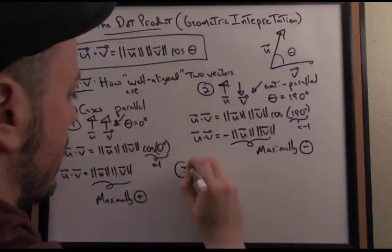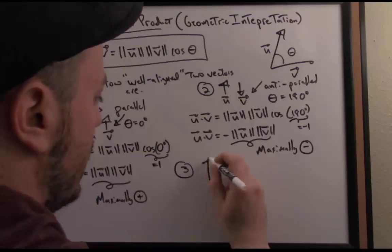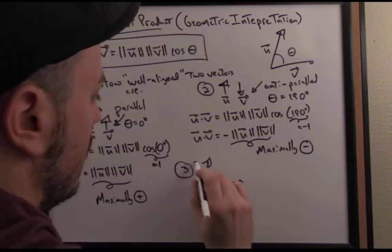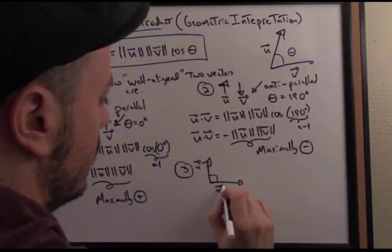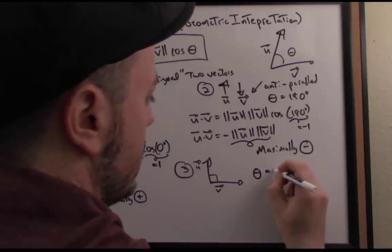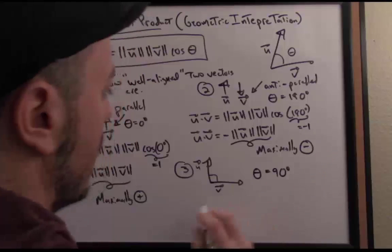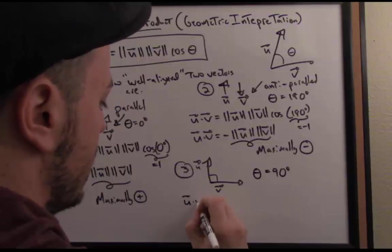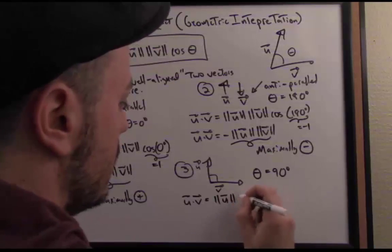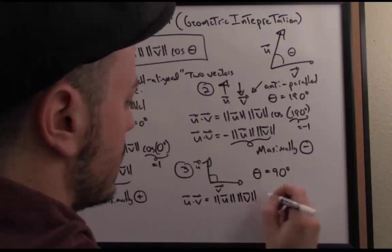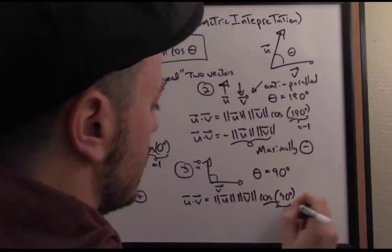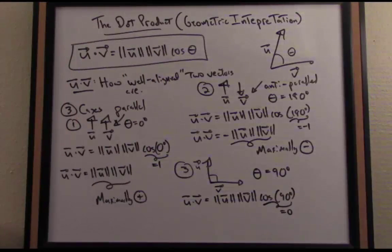A third natural case to look at would be, what's halfway in between parallel and anti-parallel? That's if the vectors meet at a right angle. In other words, our theta, our angle between the two vectors, would be 90 degrees in this case. And the dot product, once again using the identity from above, is the norm of u times the norm of v times cosine of 90 degrees. Cosine of 90 degrees from trigonometry is actually equal to zero.